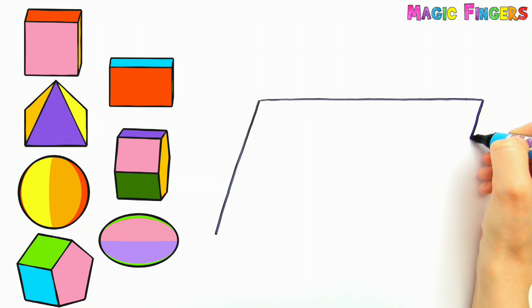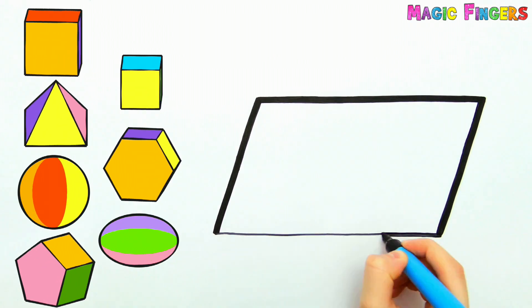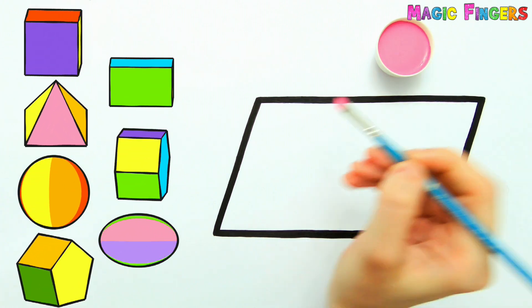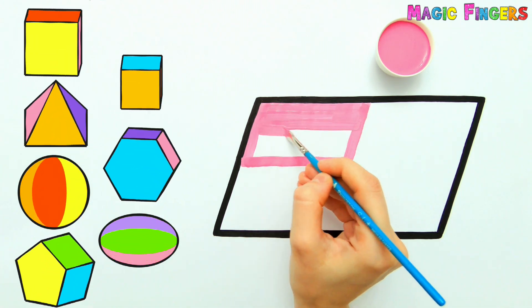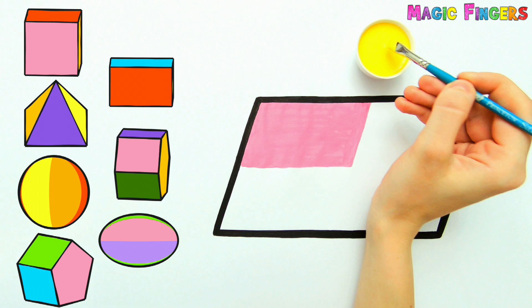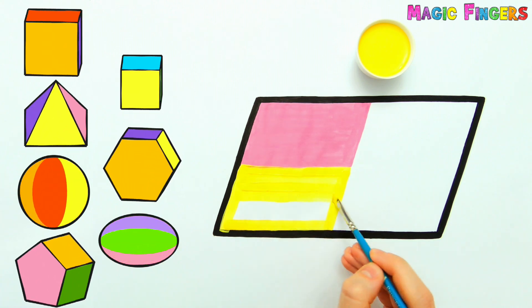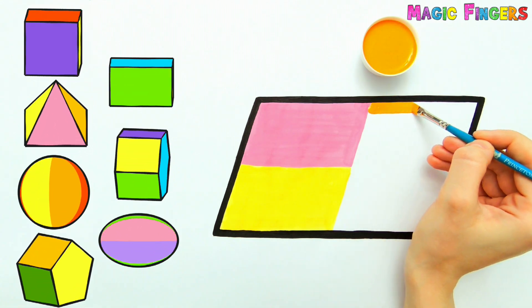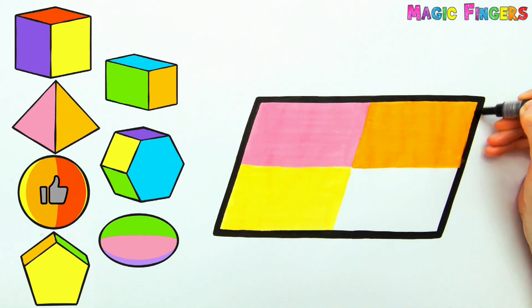Finally, I'm drawing a parallelogram. The parallelogram will turn into a parallelepiped after the painting. Pink, yellow, orange, green.